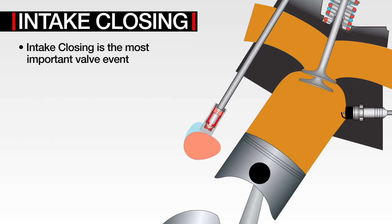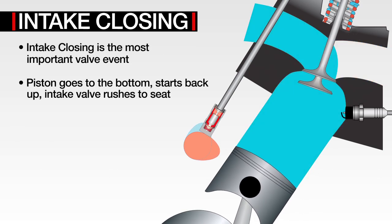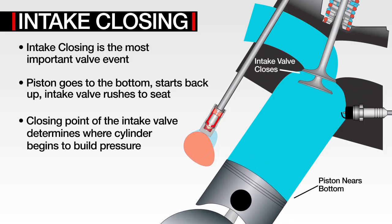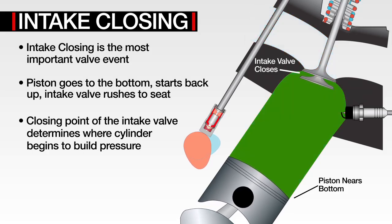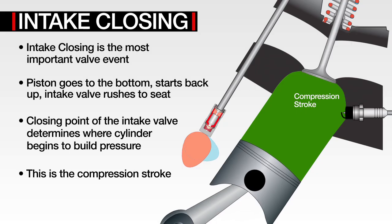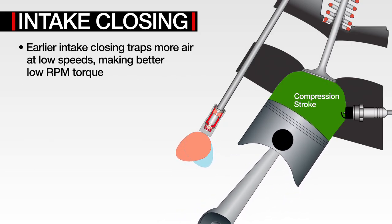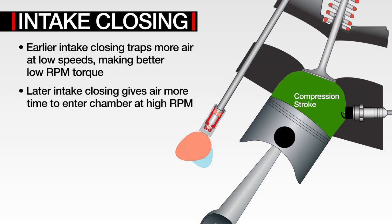Intake closing is the most important valve event. The piston goes all the way to the bottom, and as it starts back up, the intake valve rushes to the seat. The closing point of the intake valve will determine where the cylinder begins to build pressure, as we are now into the compression stroke. Earlier intake closings will trap more air in the chamber at low speeds, making better low RPM torque. Later intake closings give the air more time to enter the chamber at higher RPM.